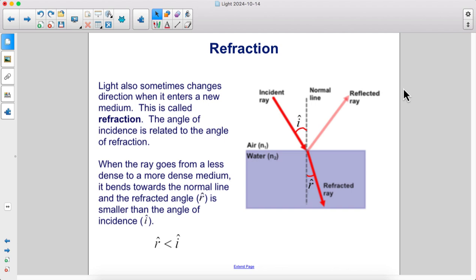When the ray goes from a less dense to a more dense medium, it bends towards the normal line, and the refracted angle is smaller than the angle of incidence. You can see this angle here is smaller than this angle up here.